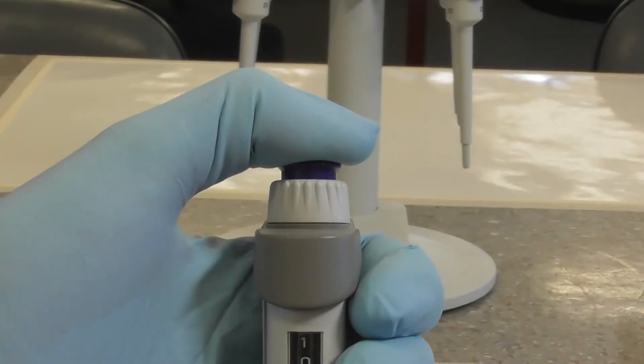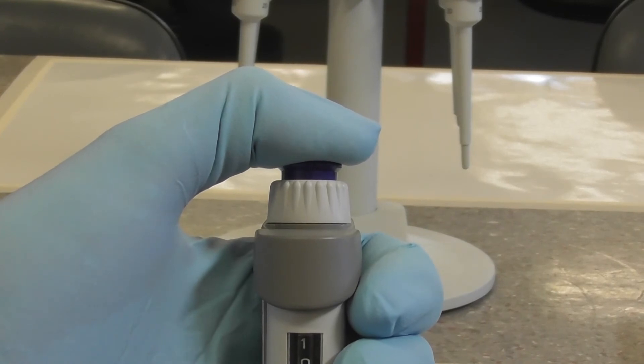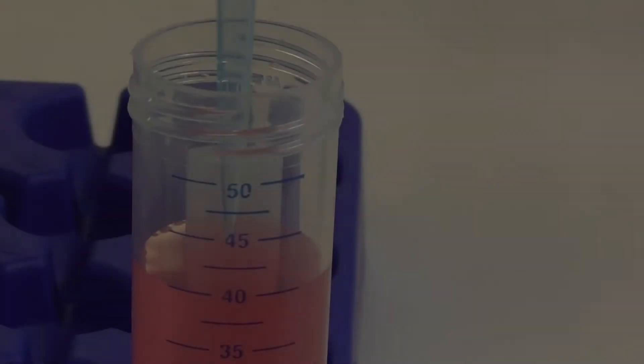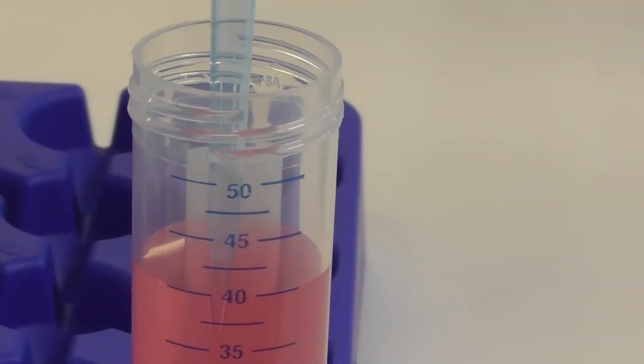You do this by first pressing the plunger down to the first stop or point of resistance. Then immersing the tip into the liquid by a few millimeters and then slowly releasing the plunger.